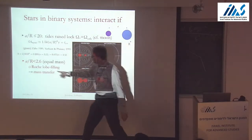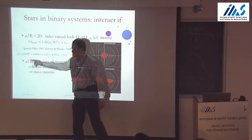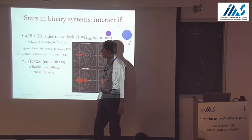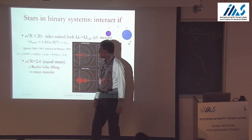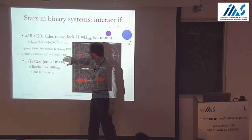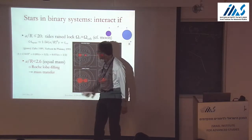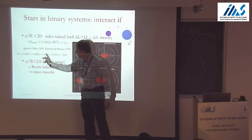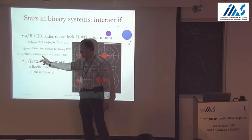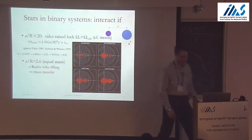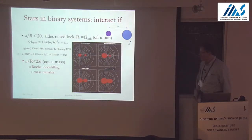A question arose about the dimensionless moment of inertia. The relevant polytrope index here is n equals 3 — that is the gas-dominated polytrope — and n equals 3 also applies to the radiation-dominated polytrope.